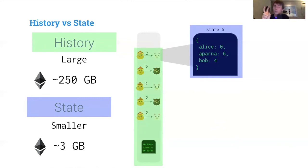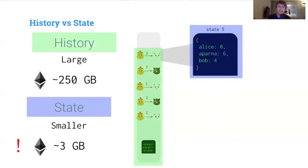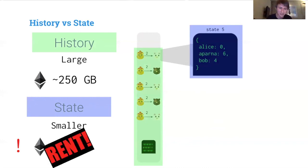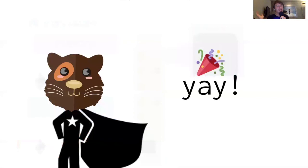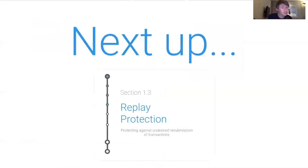This is where concepts like warp sync come in — if you trust the state is correct, you only need to download the state. But then how do you trust the state without verifying the history? That's the interesting interplay between these two concepts. Also, 3 gigabytes is already quite large, so there are rent proposals that charge fees for bloating the state. Next up, we'll be talking about replay protection — protecting against resubmission of transactions.